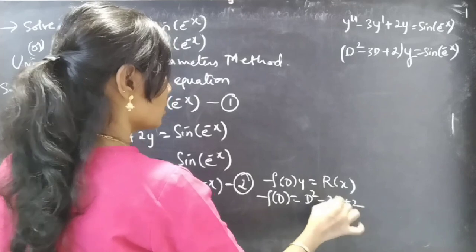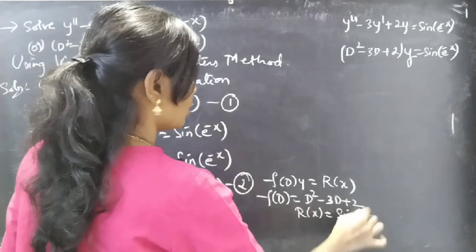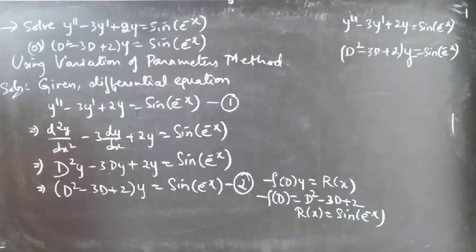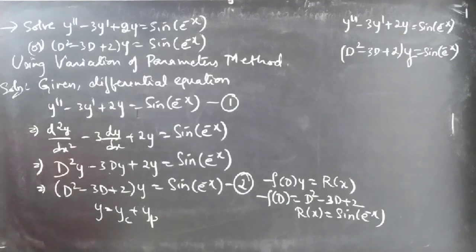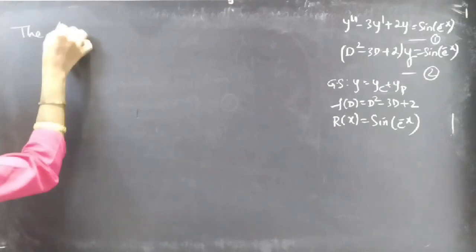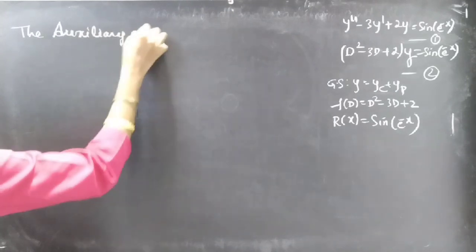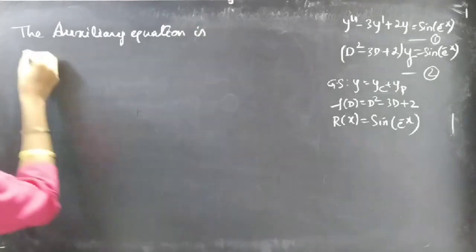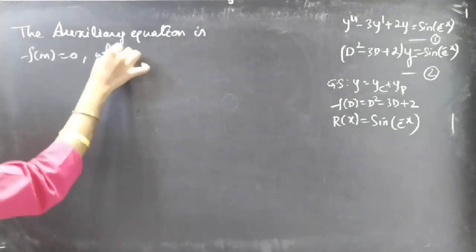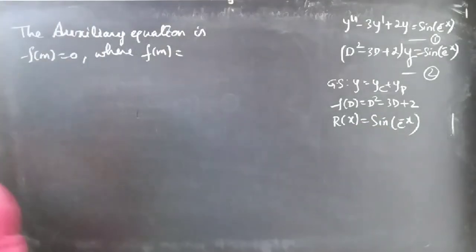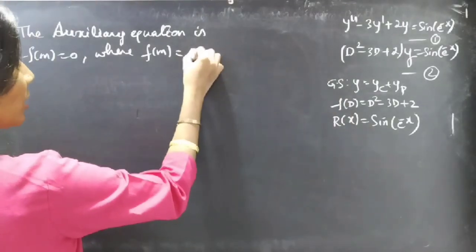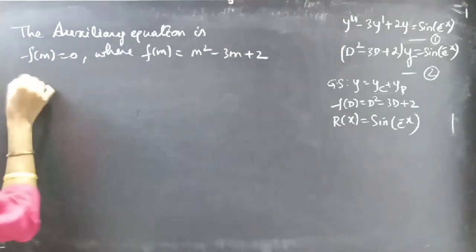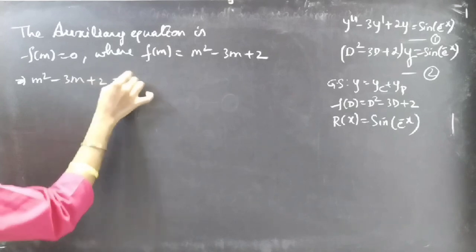Here f(D) = D² - 3D + 2 and R(x) = sin(e^(-x)). We'll find the solution using y = yc + yp. We'll find yc using the auxiliary equation and later find yp using the variation of parameters formulae. The auxiliary equation is f(m) = 0, where we replace the differential operator D by m, giving f(m) = m² - 3m + 2. The auxiliary equation becomes m² - 3m + 2 = 0.